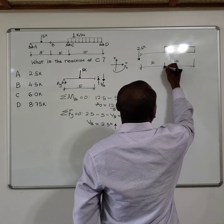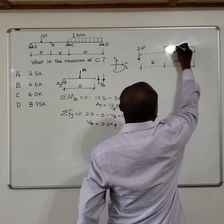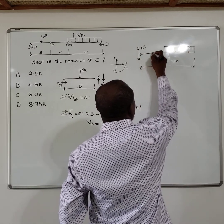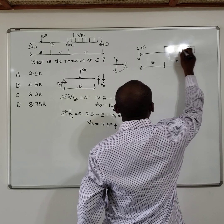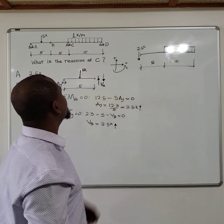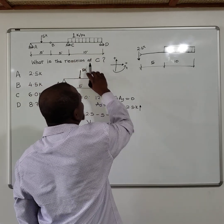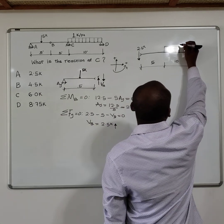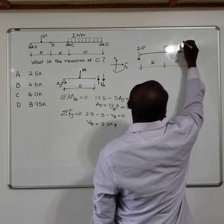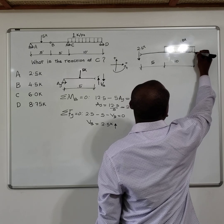All right, so we have this uniform load of 1 kip per foot. So the equivalent point load of this uniform load will be 1 kip per foot multiplied by 10 feet, that gives you 10 kips in the middle of the beam. So this is our point D, point C, and that's where we have interest. So now we need to solve for the reaction at point C.